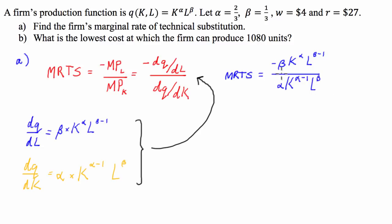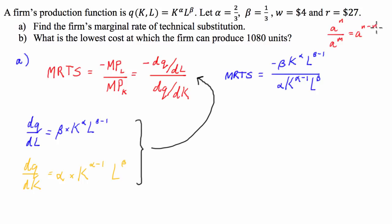From here I'm going to use a few index laws — specifically that a to the n over a to the m equals a to the n minus m — to simplify this relationship.